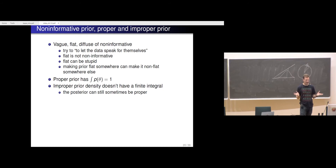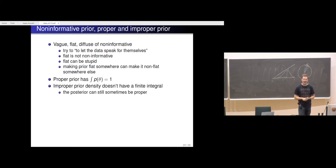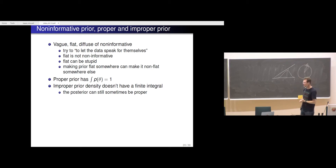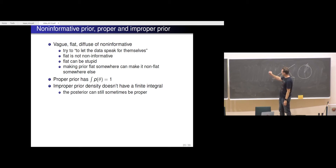Bayesians then, some of them started to think that in order to gain acceptance, they should also use non-informative priors, so that they trust the data. But it's very difficult to be completely non-informative, like flat priors. In the case of the binomial model and theta, the flat uniform prior is not that bad usually.